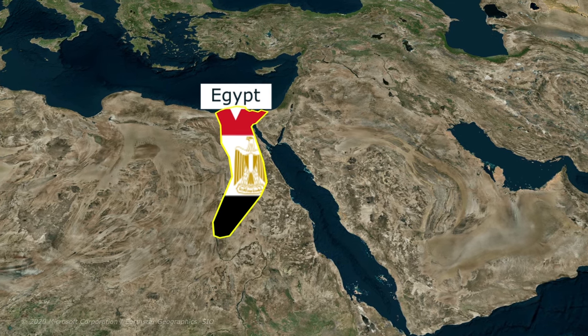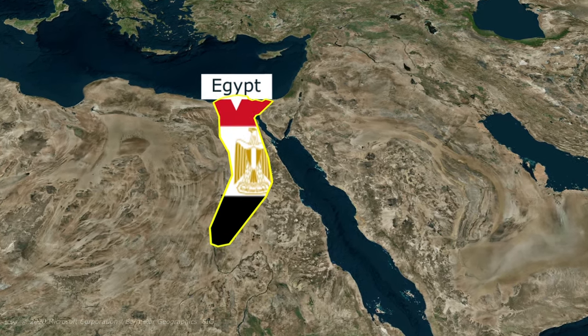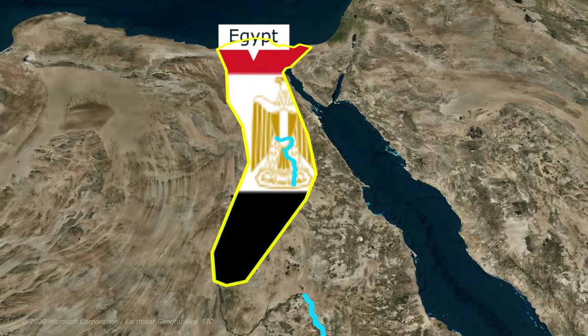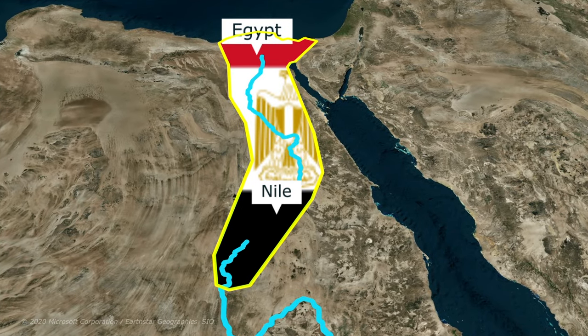Ancient Egypt civilization flourished for thousands of years along the Nile river in northeastern Africa. The Nile's annual flooding created some of the most fertile soil in the world. This agricultural bounty enabled the Egyptians to produce surplus crops, which supported a larger population, fueled trade, and contributed to the wealth and stability of the civilization.